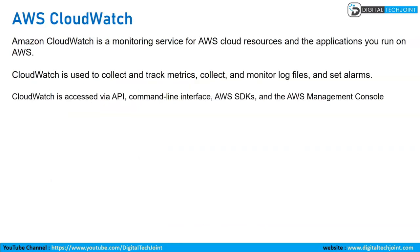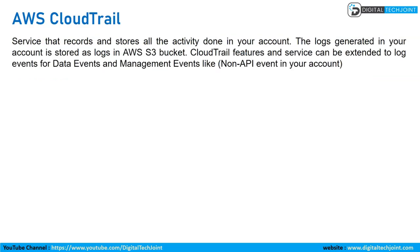Amazon CloudWatch is a monitoring service for AWS cloud resources and applications you run on AWS. CloudWatch is used to collect and track metrics, collect and monitor log files, and set alarms. It is accessible via API, command line interface, AWS SDK, and the AWS Management Console.